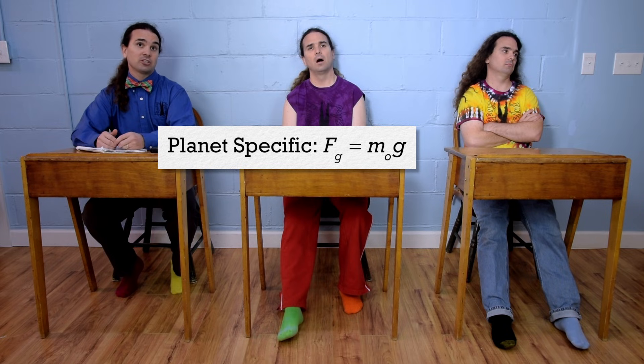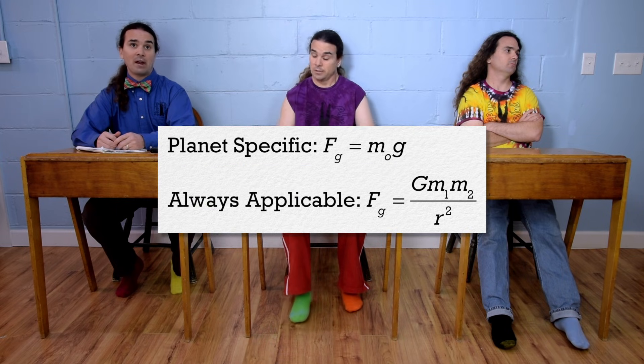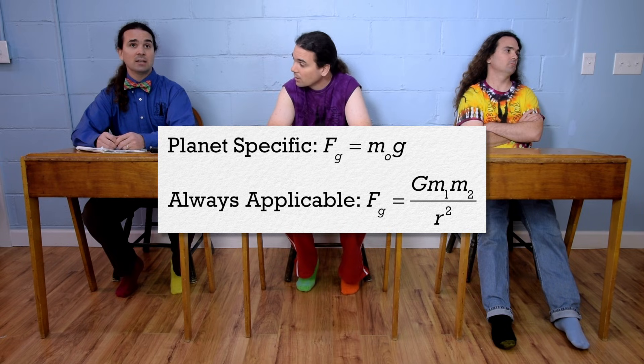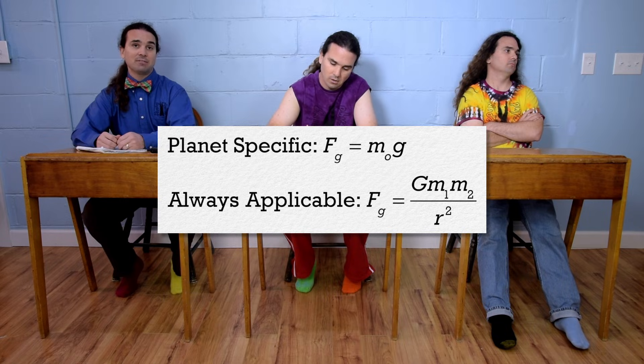The general equation for the force of gravitational attraction is Newton's universal law of gravitation, which is force of gravity equals the universal gravitational constant times mass 1 times mass 2, all divided by r squared, where r is the distance between the centers of mass of the two objects.